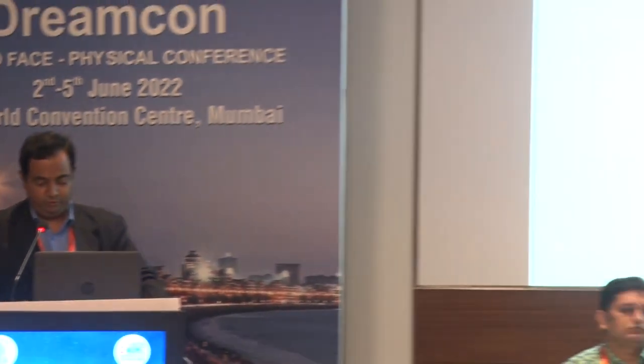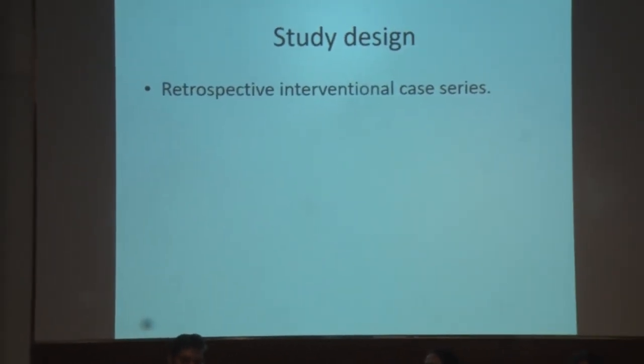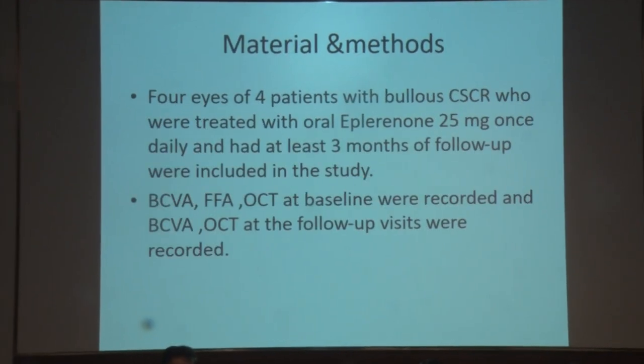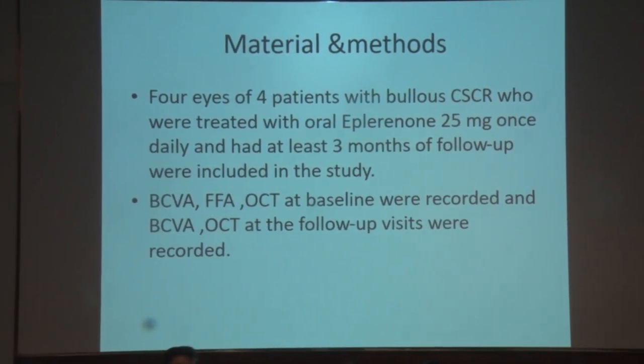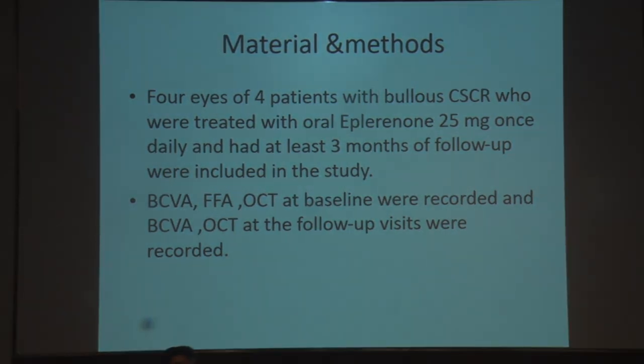Dr. Vignesh presented on eplerenone in the treatment of bullous variant of central serous chorioretinopathy (CSCR). The bullous variant is rarer compared to other forms. The study aimed to evaluate the efficacy of eplerenone in treating bullous CSCR. It was a retrospective international case series of four eyes of four patients with bullous CSCR treated with oral eplerenone 25 mg once daily with at least three months of follow-up. BCVA, FFA, and OCT at baseline and follow-up were recorded. All four patients were male, and all had complete resolution of macular and inferior bullous retinal detachment.